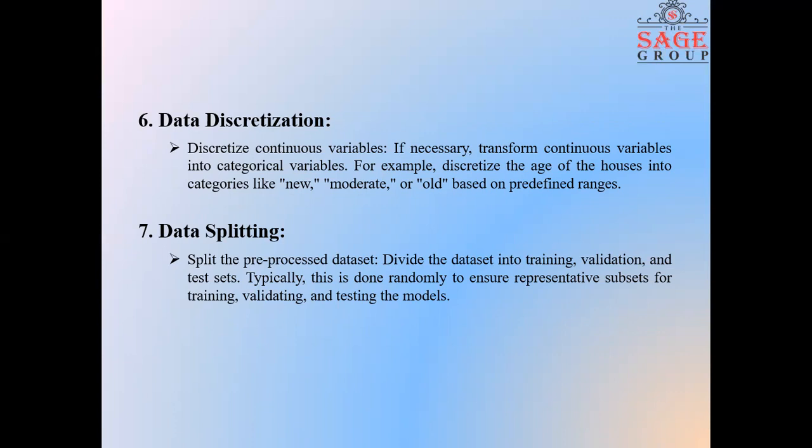Next step is data splitting. Split the pre-processed dataset. Divide the dataset into training, validation and test sets. Typically, this is done randomly to ensure representative subsets for training, validating and testing the models.